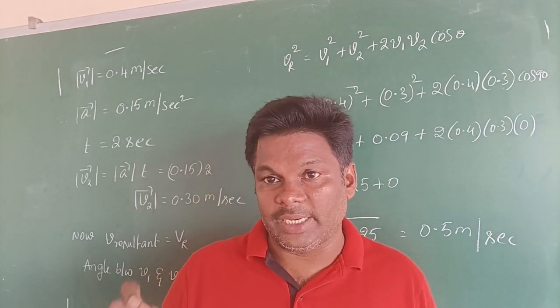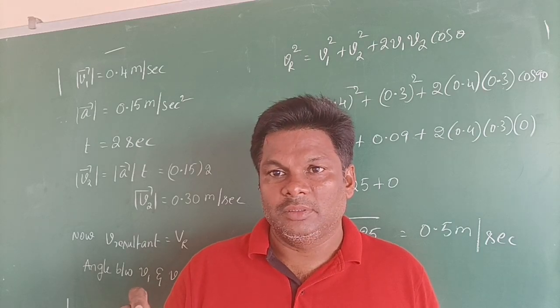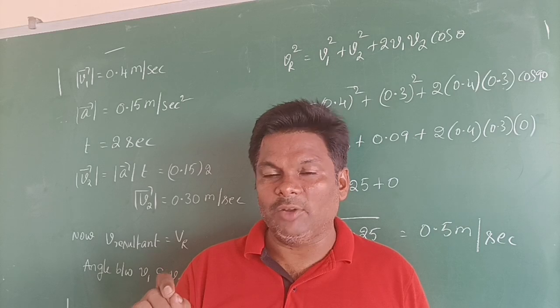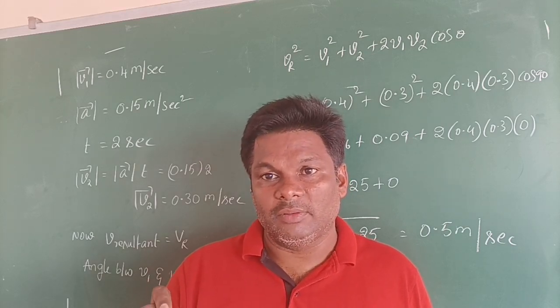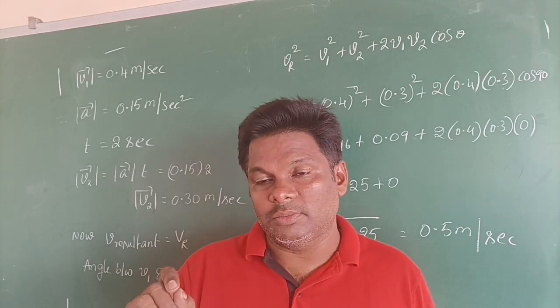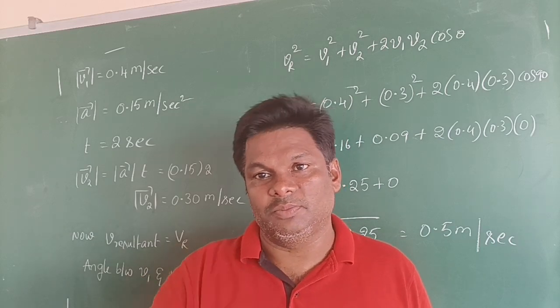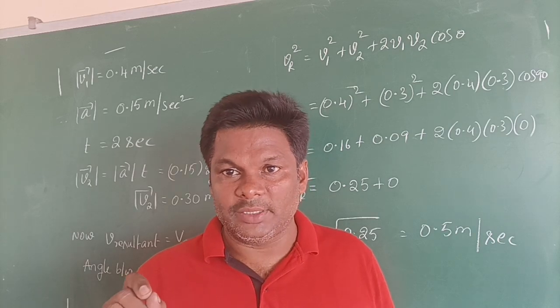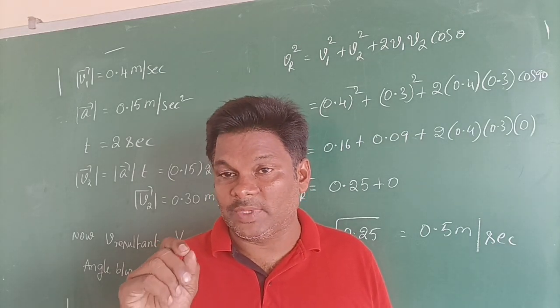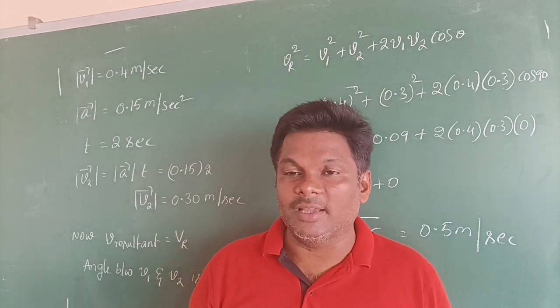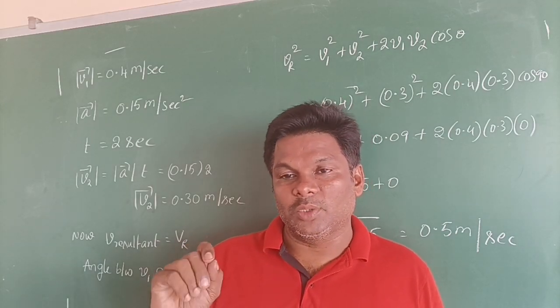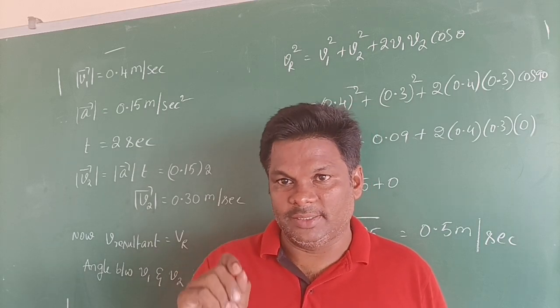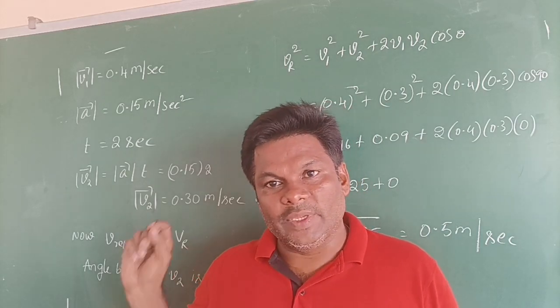To simplify this or to get this resultant, we will go for Parallelogram law of vector formula. The concept is Parallelogram law of vector where we have two vectors named P and Q acting at a point, and the angle between those two is theta, and resultant is R. Then R is equal to root over P square plus Q square plus 2PQ cos theta. According to that concept we will solve this problem.